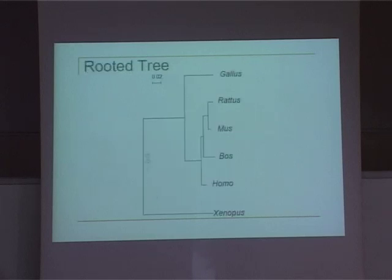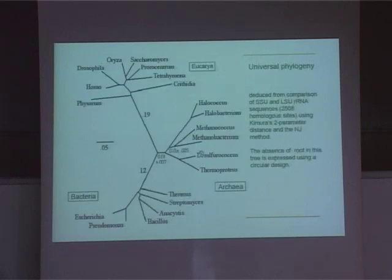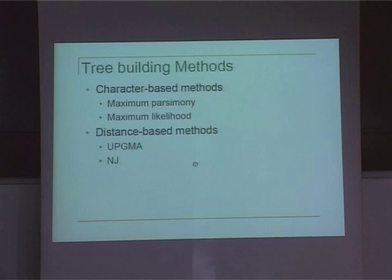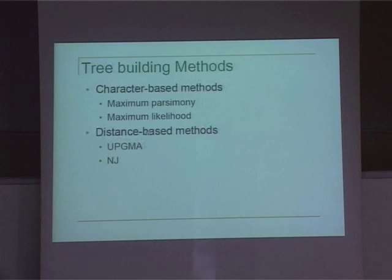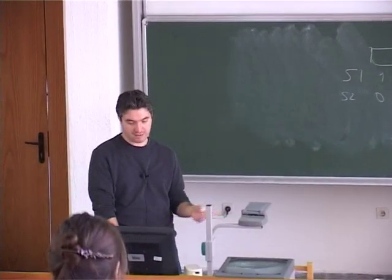Here is a rooted tree; the root is the hypothetical ancestral species, and the branch lengths again mean something. Here is another larger unrooted tree with branch lengths. If we have character state matrices, there are methods like maximum parsimony or maximum likelihood that can process such matrices and build phylogenetic trees. Today we are going to see the UPGMA technique, which is a distance-based method — it takes a distance matrix showing pairwise distances between each species.